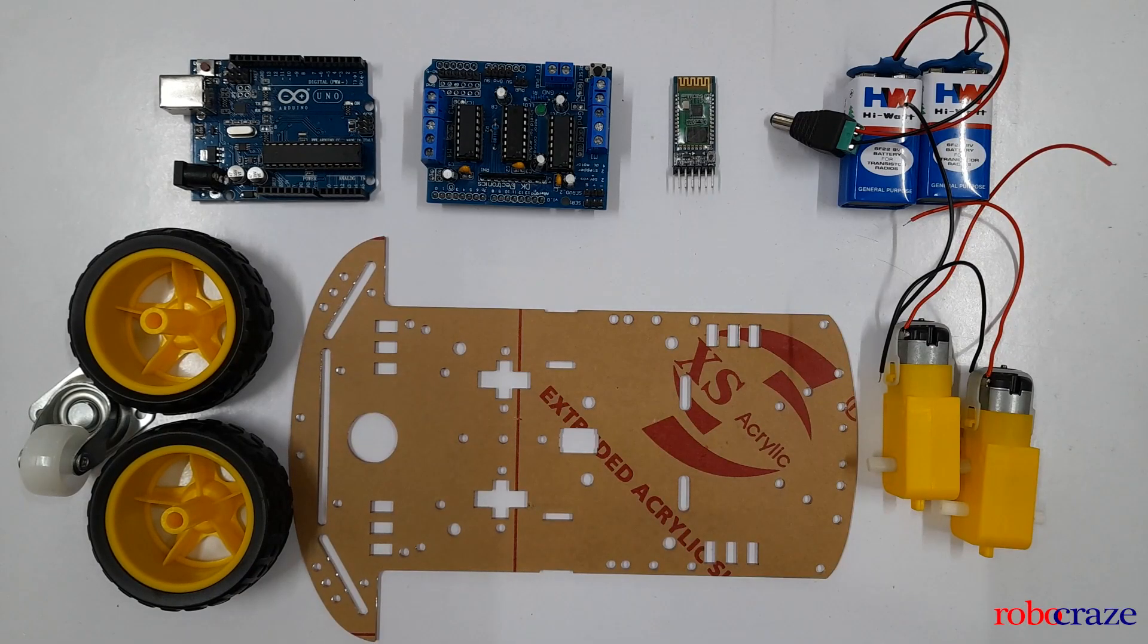Let's start by introducing the components we'll be using for making the Bluetooth control car. The components include Arduino Uno. Arduino Uno is the central processing unit for your project. It's a versatile controller that forms the foundation of your Bluetooth controlled car. Next we have motor driver shield which acts as an interface between the Arduino and the motors. It allows you to control the speed and direction of the motors effortlessly.